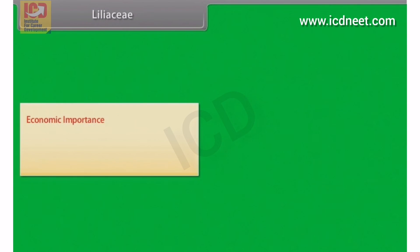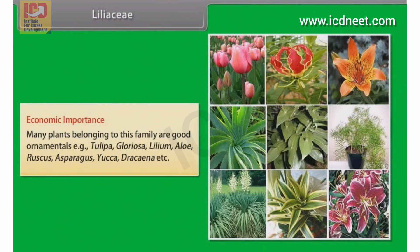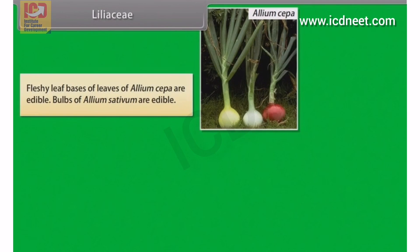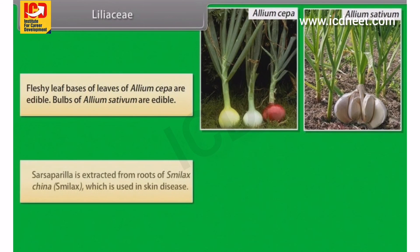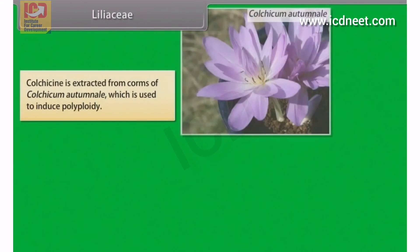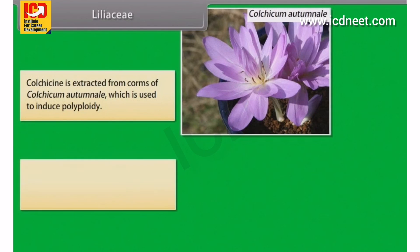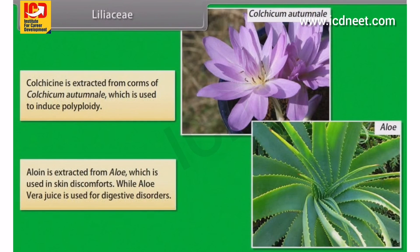Economic importance of Liliaceae: Many plants are good ornamentals, for example Tulipa, Gloriosa, Lilium, Aloe, Ruscus, Asparagus, Yucca, Dracaena etc. Fleshy leaf bases of Allium cepa are edible. Bulbs of Allium sativum are edible. Sarsaparilla is extracted from roots of Smilax china, which is used in skin disease. Colchicine is extracted from corms of Colchicum autumnale, which is used to induce polyploidy. Aloin is extracted from Aloe, which is used in skin discomforts, while Aloe vera juice is used for digestive disorders.